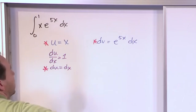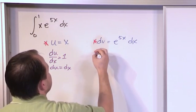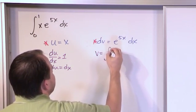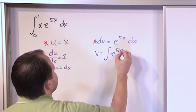And then over here to find v, we just say that v is going to be the integral of e to the 5x dx.